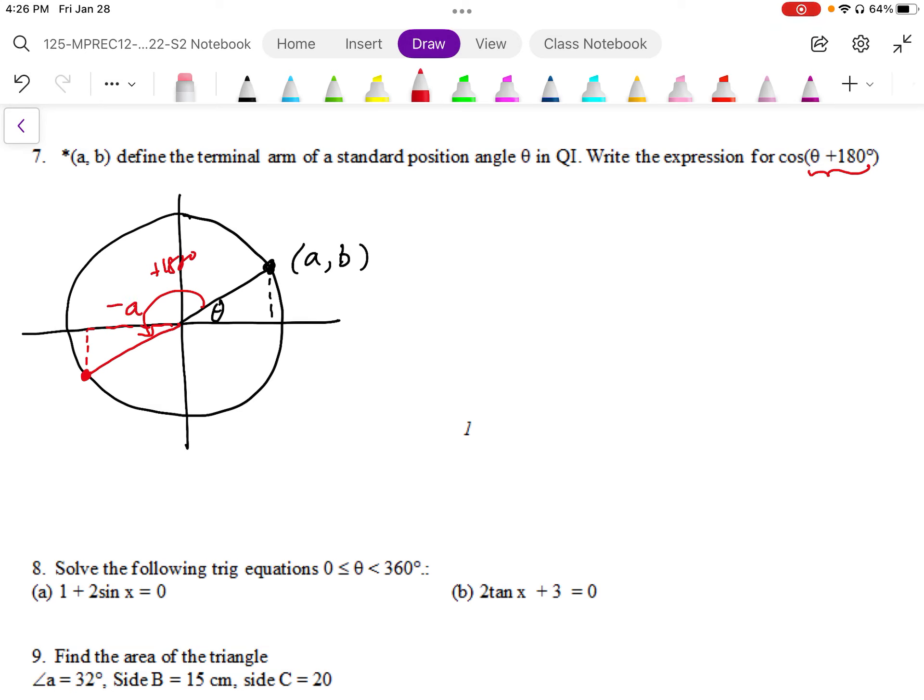Instead of A, it's going to be negative A. And vertically, instead of B, it's going to be negative B. So then the coordinate is going to be negative A comma negative B.